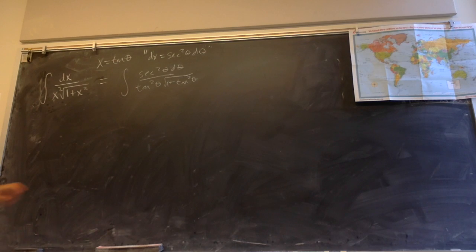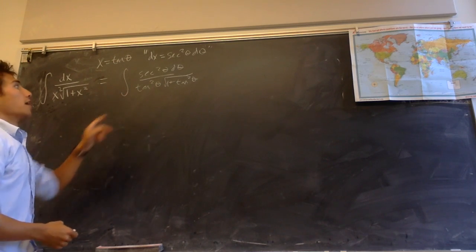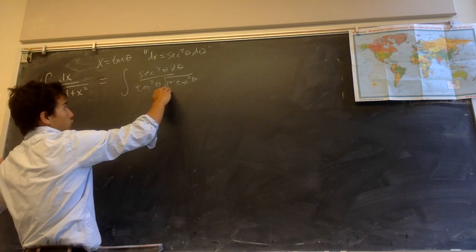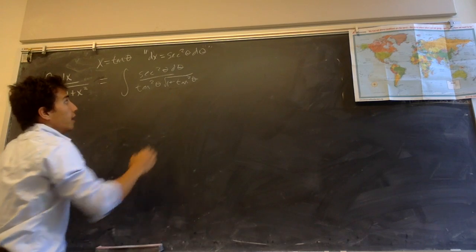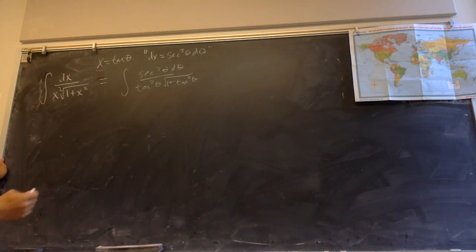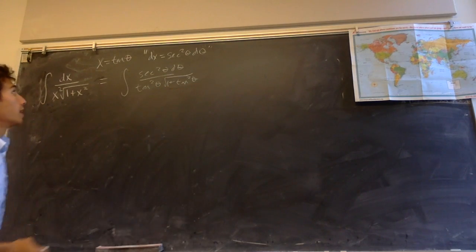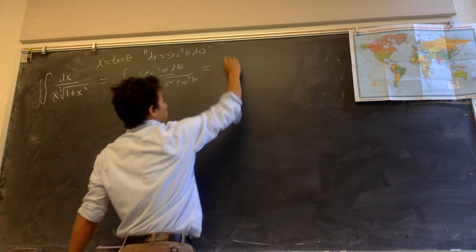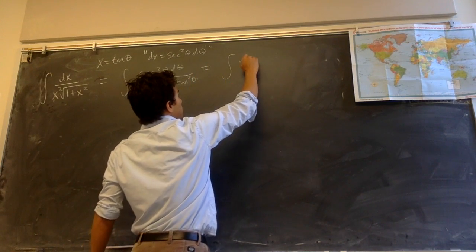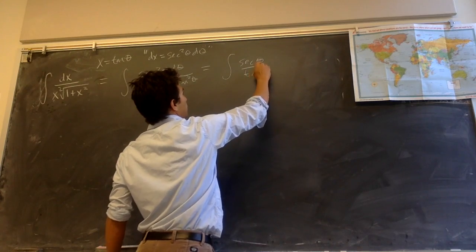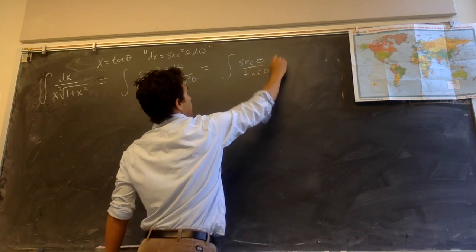Now we have this integral and we can simplify it, because the square root of 1 plus tangent squared theta: since 1 plus tangent squared theta equals secant squared, this square root is equal to secant of theta. So this becomes the integral of secant theta over tangent squared theta d theta.